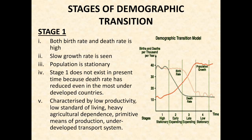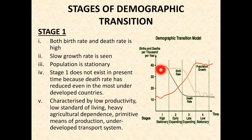In the first stage, both birth rate and death rate are high. As we can see, birth rate and death rate both are high and slow growth rate is seen. Population is stationary. Stage 1 does not exist in present time because death rate has reduced even in the most underdeveloped countries. The population is highly stationary and the green line denotes the death rate, which is very high, but this rate does not exist because underdeveloped countries also have better medical facilities.